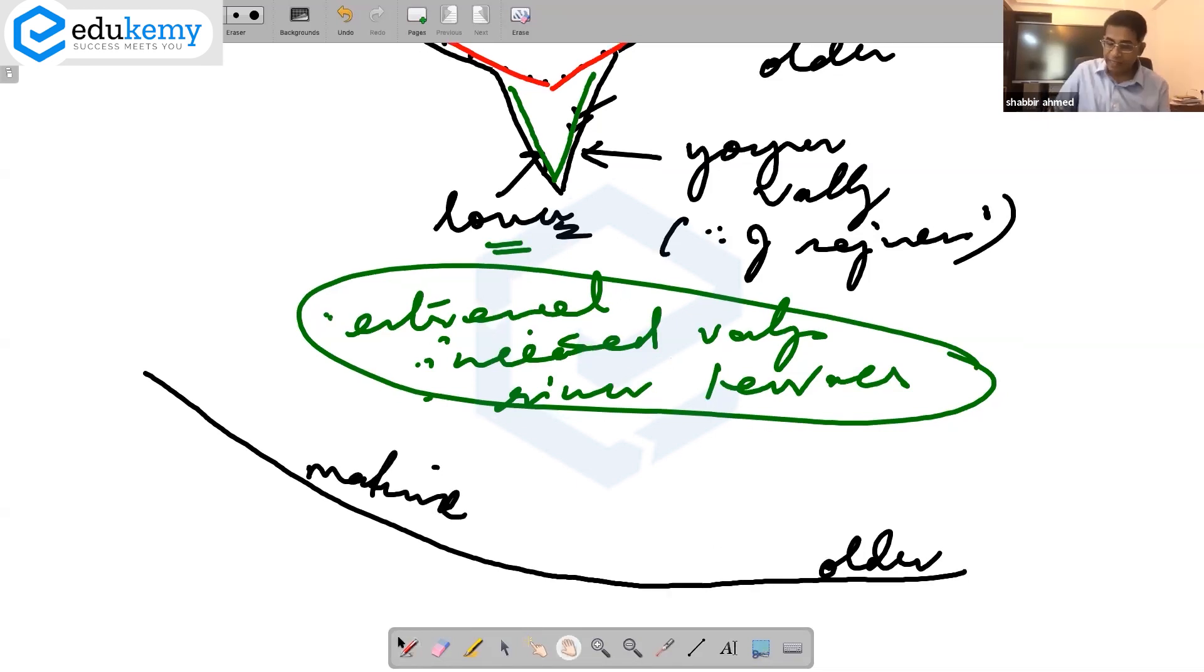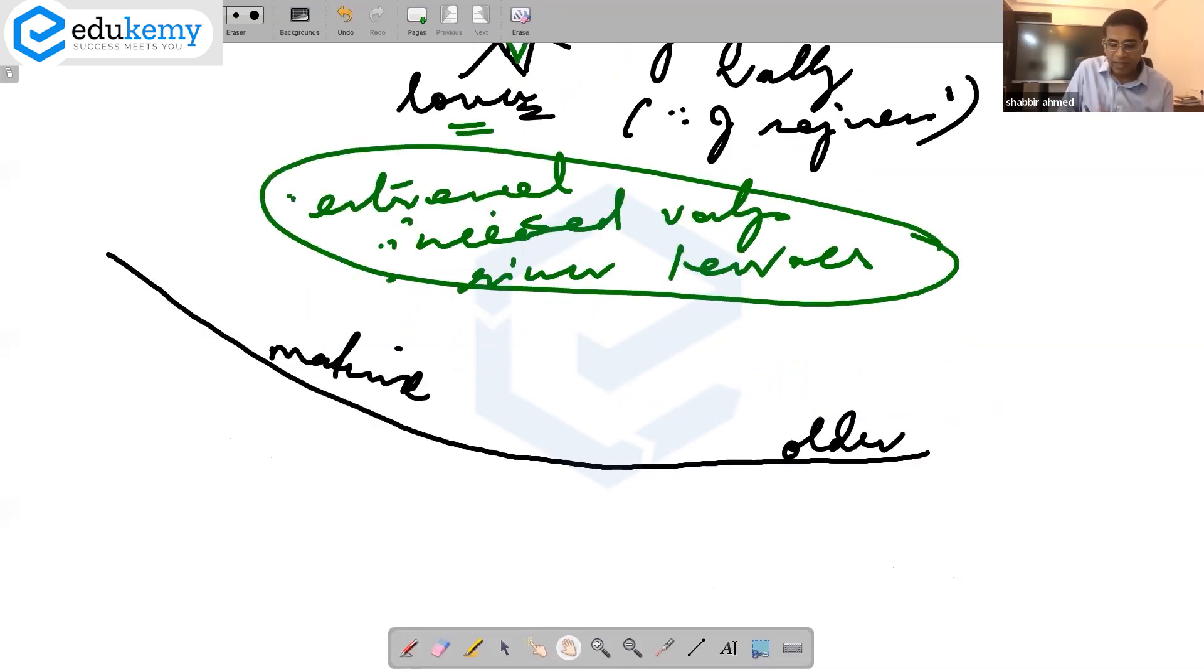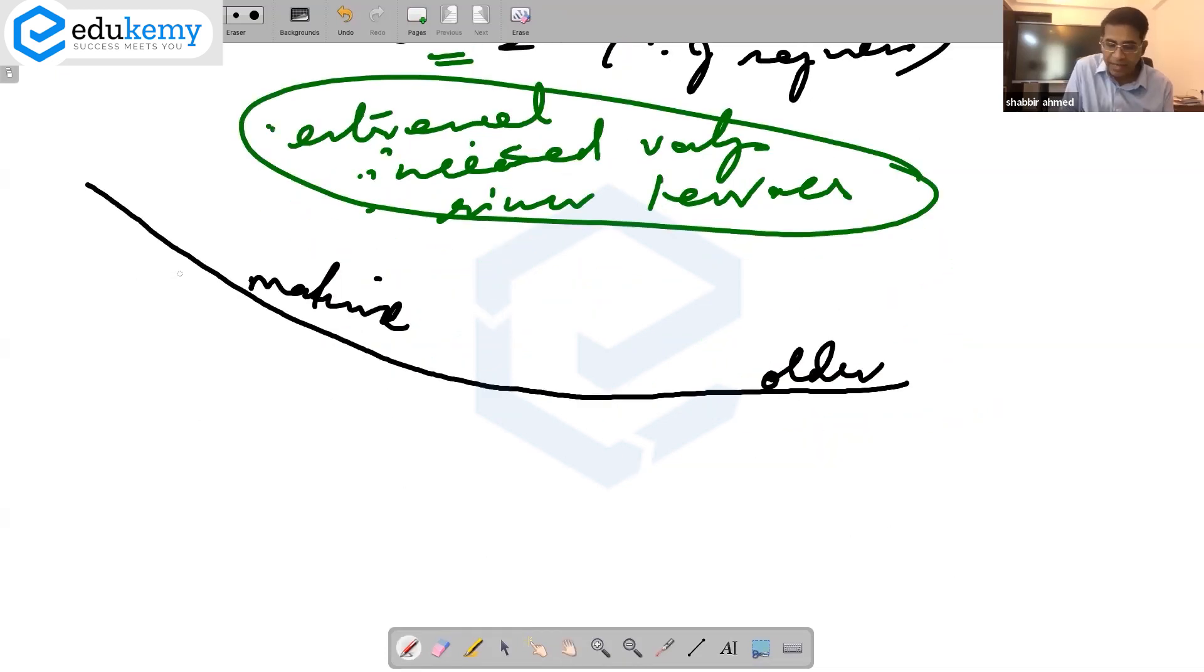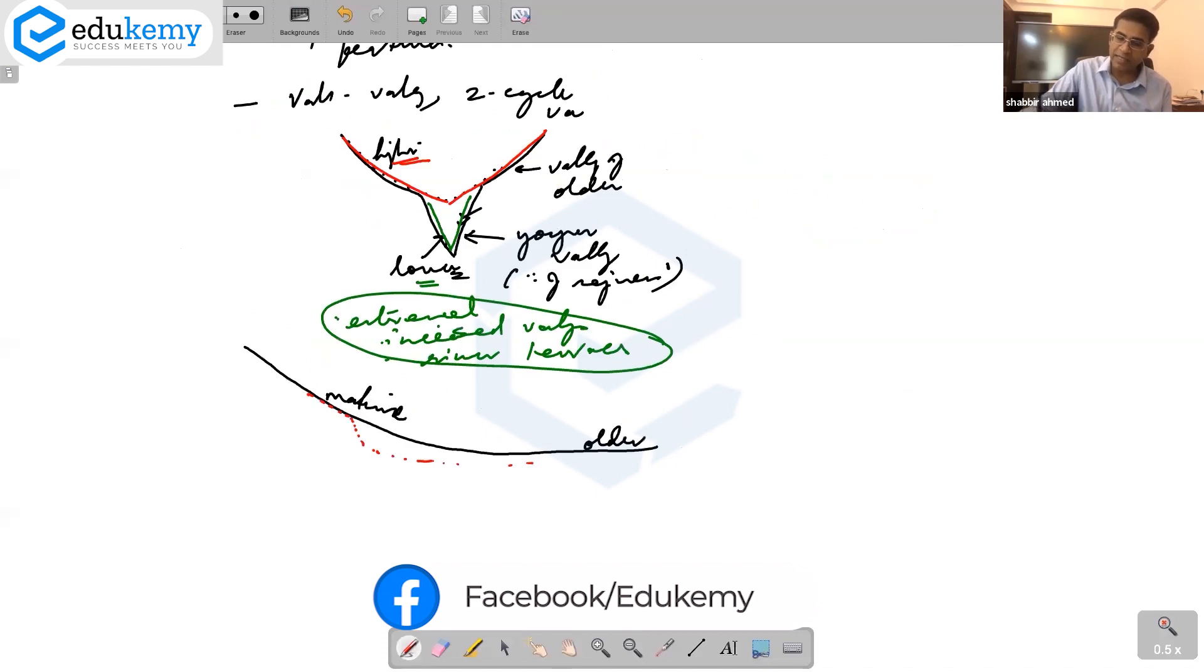Now, when we have rejuvenation, it's possible that there is some nick point here. There is some cutting here, nick point here, and this is the base level. In this case, at the same location, you have an older feature above and you have a younger feature below.